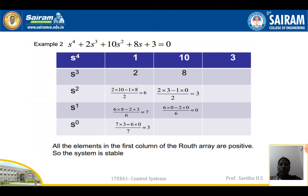Second example: s^4 + 2s^3 + 10s^2 + 8s + 3 = 0. Since s^4 is even, the first row is: 1, 10, 3; and the second row is: 2, 8, 0. For s^2: (2*10 - 1*8)/2 = 6, and (2*3 - 1*0)/2 = 3. For s^1: (6*8 - 2*3)/6 = 7, and (6*0 - 2*0)/6 = 0. For s^0: (7*3 - 6*0)/7 = 3. All elements in the first column of the Routh array are positive, so the system is stable.